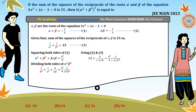Substituting, we get 15 + 2/(−1/3) = (λ²/9) · (1/(−1/3)²), which simplifies to 15 − 6 = λ². Therefore λ² = 9 and λ = ±3.